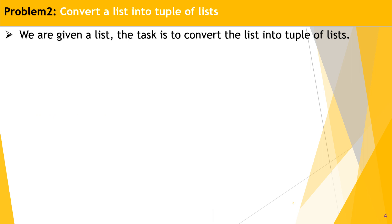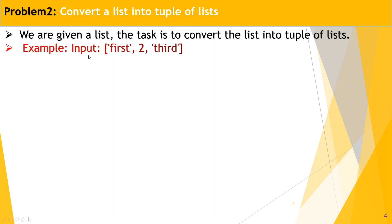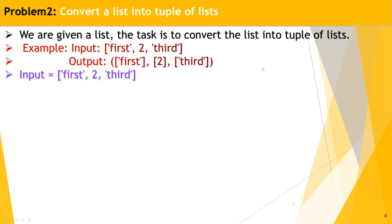Let's move to the next problem statement — the second one: convert a list into a tuple of lists. Two lists are given. The task is to convert the list into tuples of lists. For example, input is a non-homogeneous list like ['first', 'to', 'third']. The output is each element in the form of a list, separated by commas, and the whole thing is a tuple.